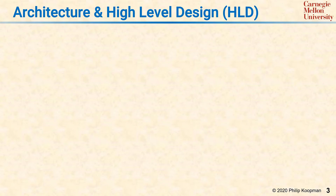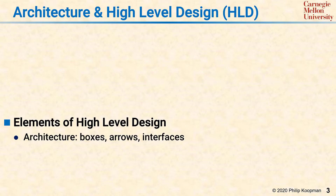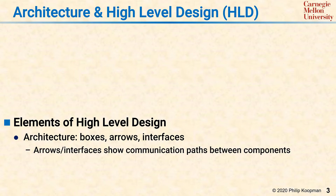The elements of a high-level design document typically include an architecture as well as a more detailed high-level design itself. The architecture is boxes, arrows, and sometimes interface descriptions. The arrows or interfaces show communication paths between components, with the components being the boxes.